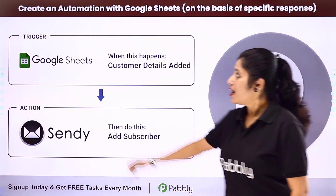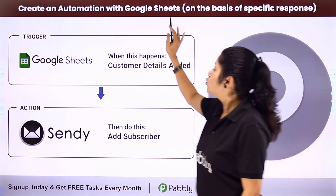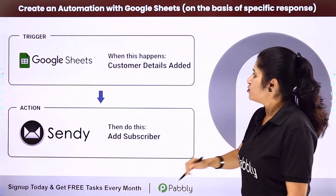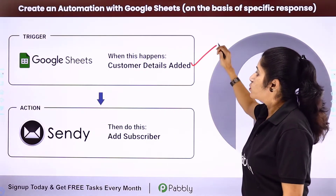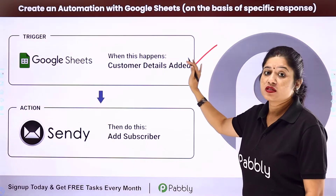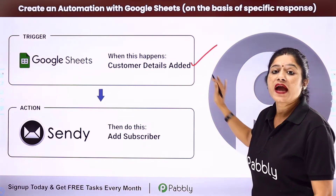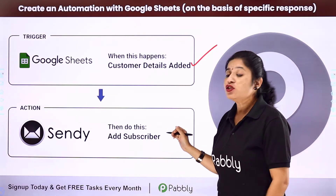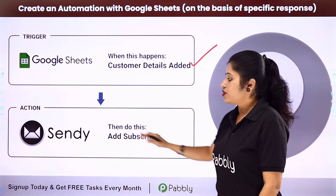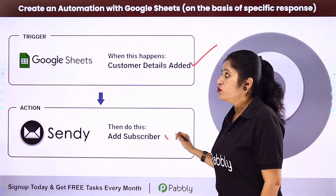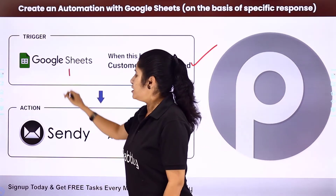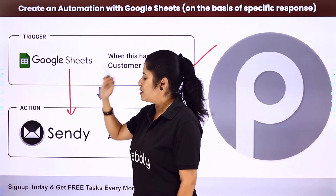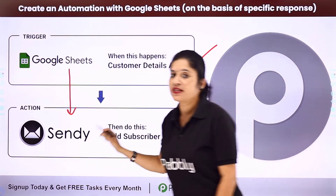In this video we are going to learn how you can create an automation with Google Sheets based on specific response. Whenever you add a new customer detail to your Google Sheet based on specific response, the same customer details should be added as a new subscriber into a specific subscriber list in your email newsletter application, Sendee. For that you need to integrate Google Sheets with Sendee — your trigger application would be Google Sheets and your action application would be Sendee.